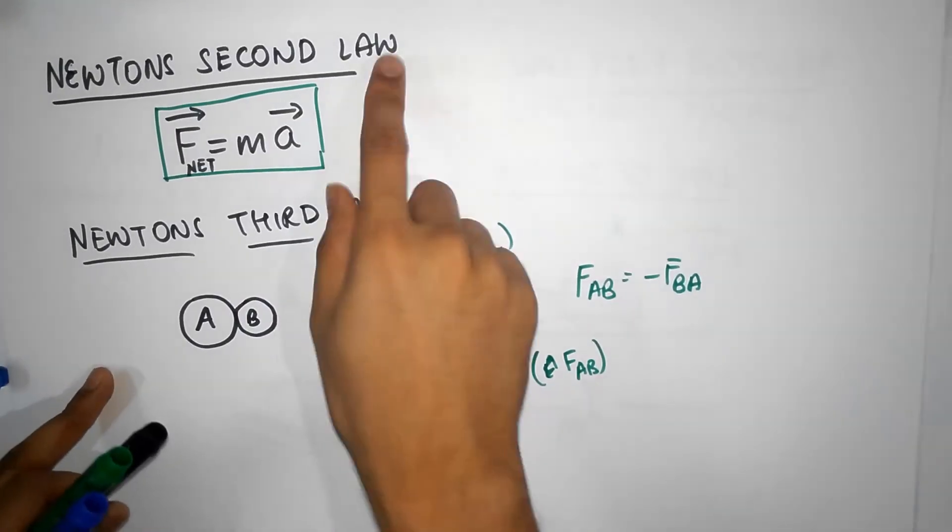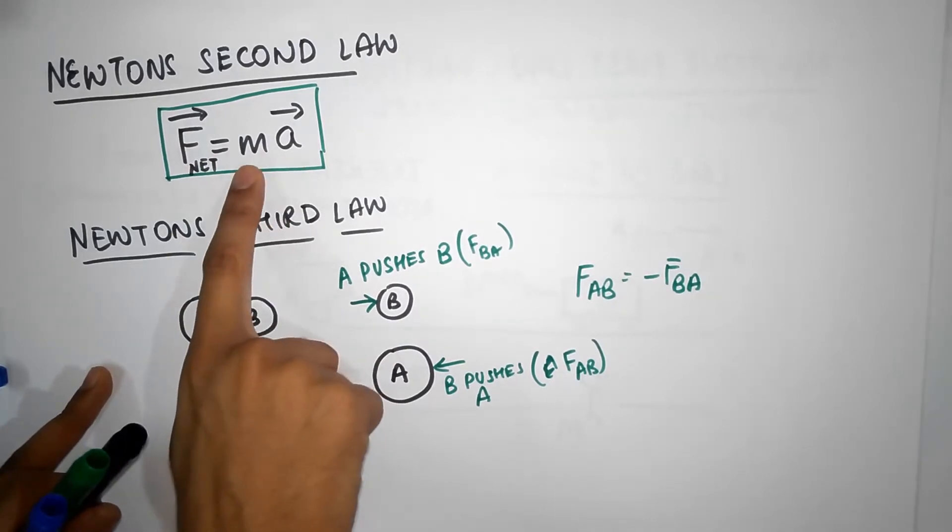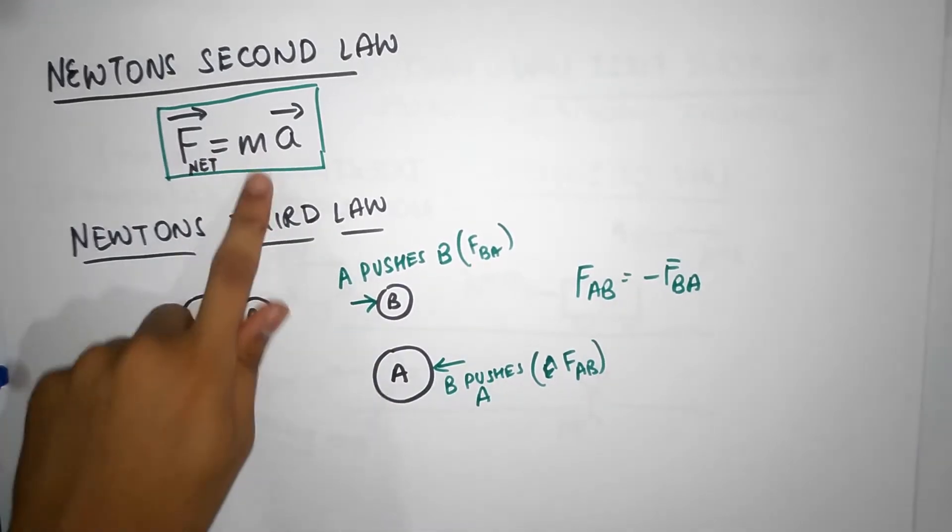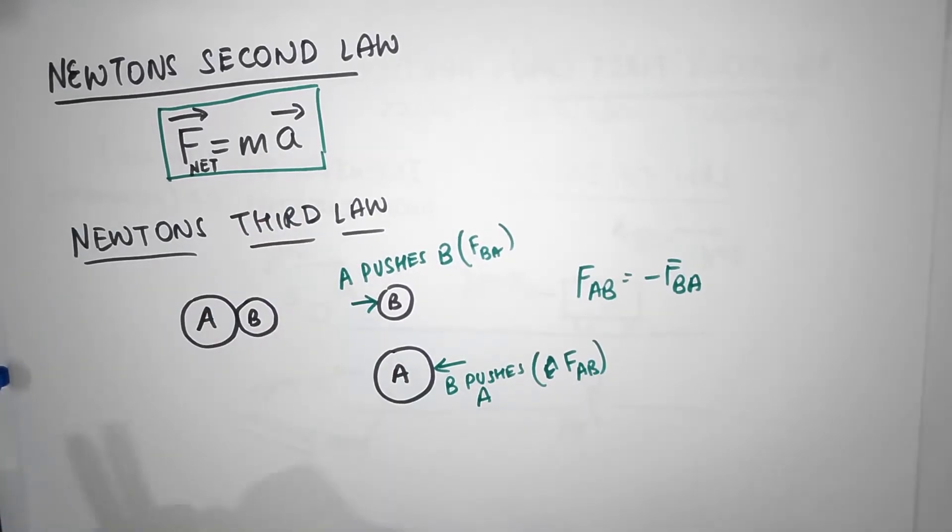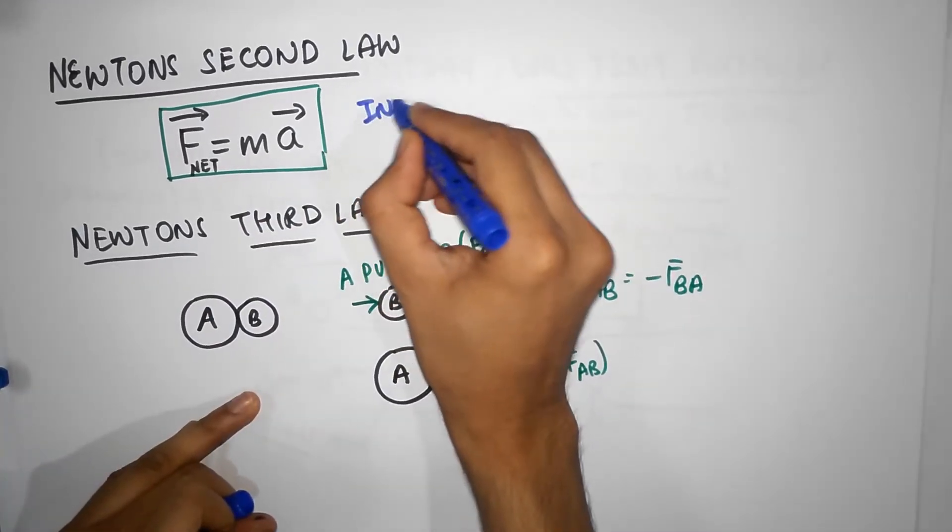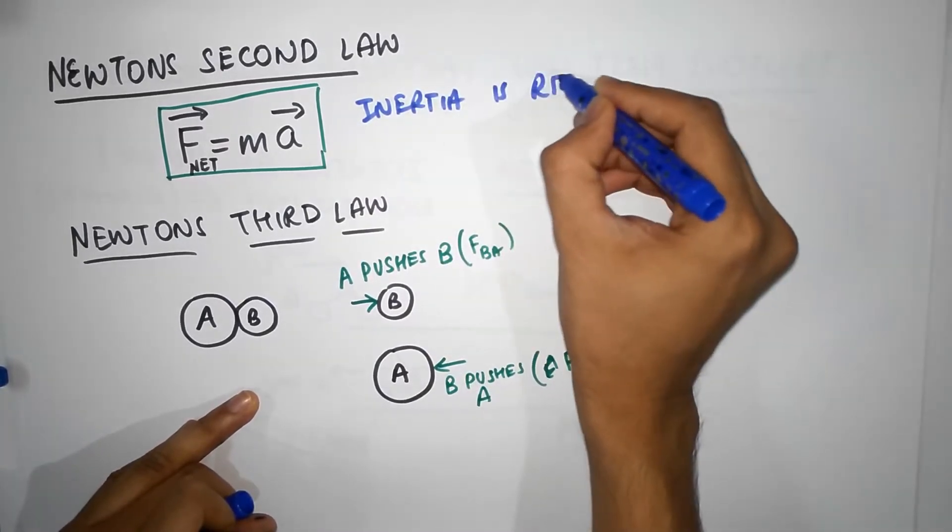So the second law is just the law of acceleration. It tells you what's the connection between the force and acceleration. It turns out to be the inertia. If there is more mass it's difficult to accelerate a body and that's why we say inertia is resistance to acceleration.